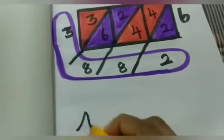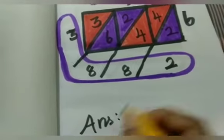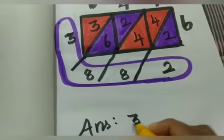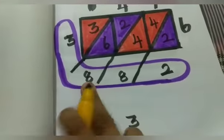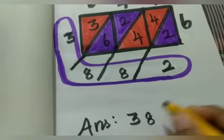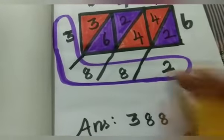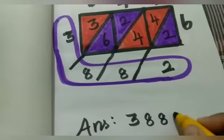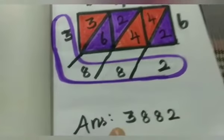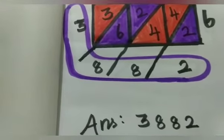Reading the answer: 3, 8, 8, 2. So the answer is 3,882.